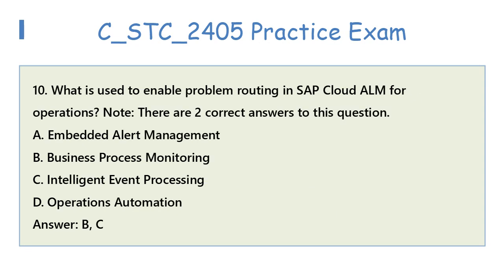Question 10: What is used to enable problem routing in SAP Cloud Om for operations? Note, there are two correct answers to this question. A. Embedded Alert Management. B. Business Process Monitoring. C. Intelligent Event Processing. D. Operations Automation. Answer: B, C.